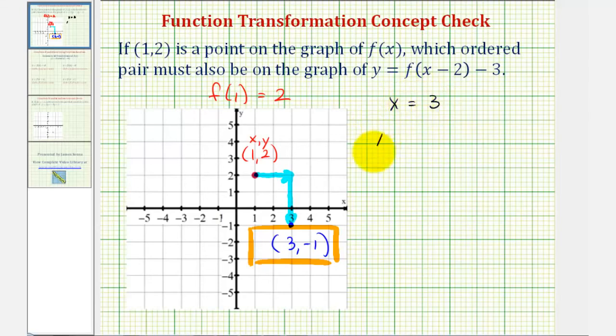Because if we have y equals f(3 - 2) - 3, notice how three minus two is one. So this would give us y equals f(1) - 3. But notice how by setting x equal to three, it shifted the point two units to the right.